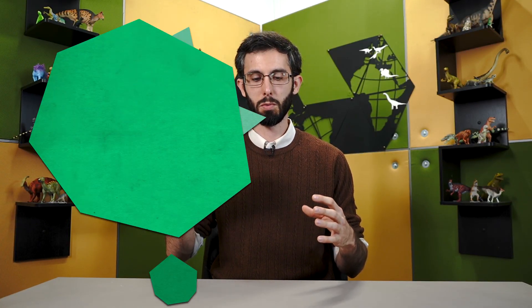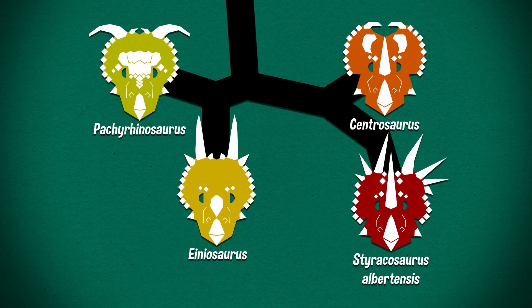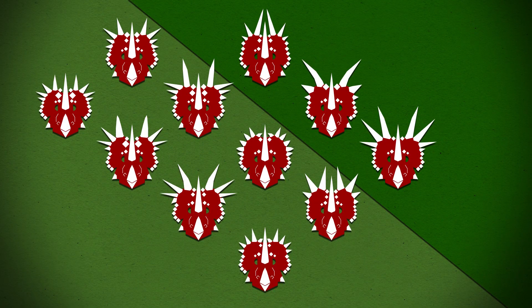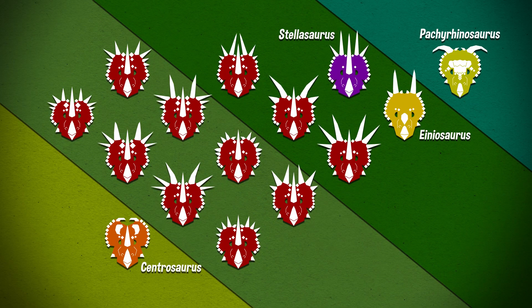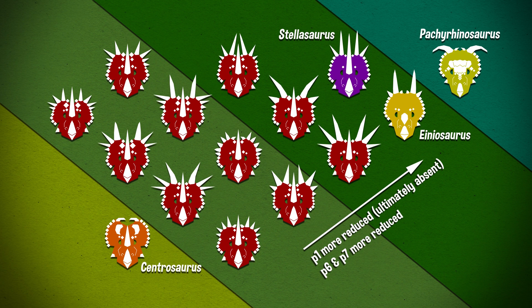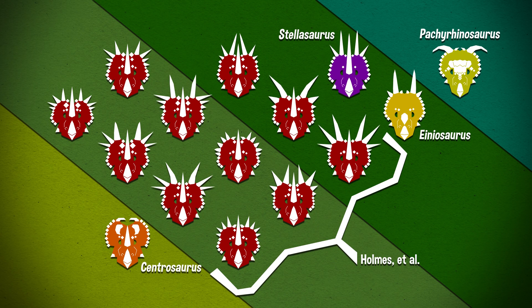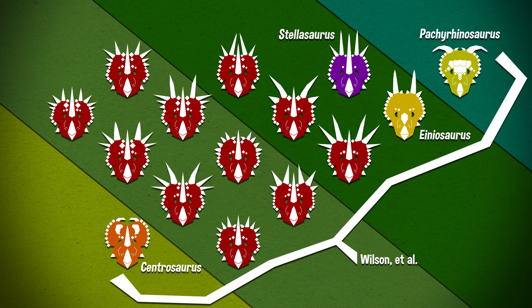These authors also disagree with Holmes et al. as far as whether we should sink Sterakosaurus ovatus into Sterakosaurus albertensis and just have one genus and species. They consider ovatus to still be a valid second species, partially because it is much younger — something like 800,000 years later than other Sterakosaurus specimens. More importantly, they think all of that individual variation that Holmes et al. find is actually change over time. Because when you zoom out and look at a bunch of different centrosaurians, those character state changes where epiparietals 1, 6, and 7 are reduced become the norm once you get up towards Einiosaurus — which I always say wrong — and especially in Pachyrhinosaurus. So where Holmes et al. see individual variation, Wilson et al. see a trend.